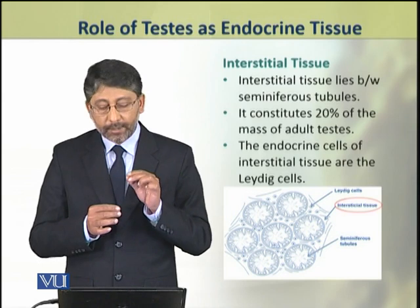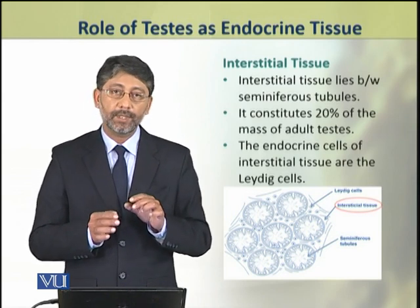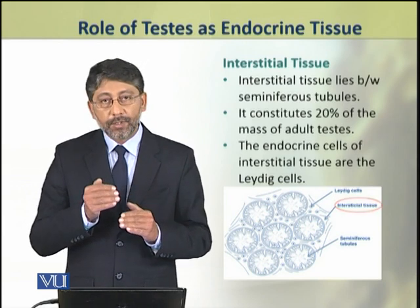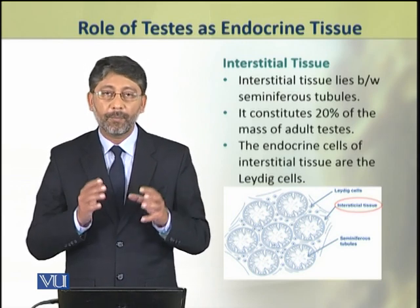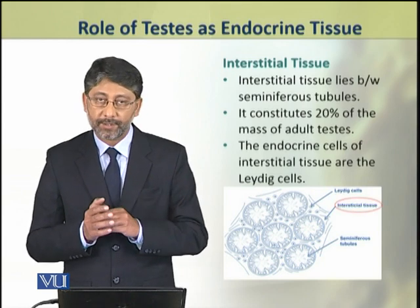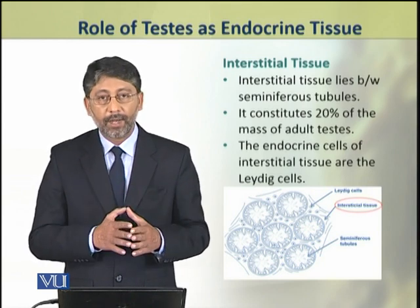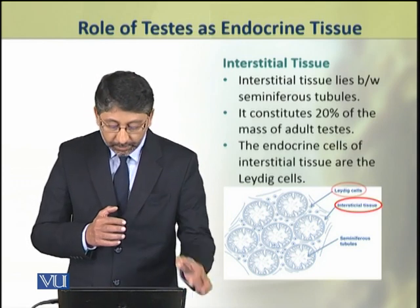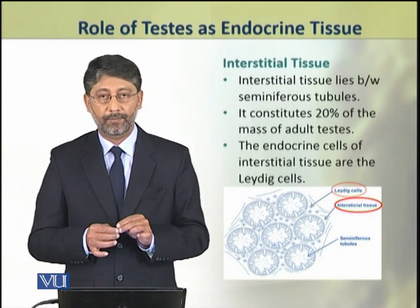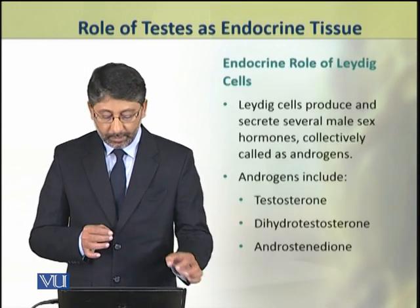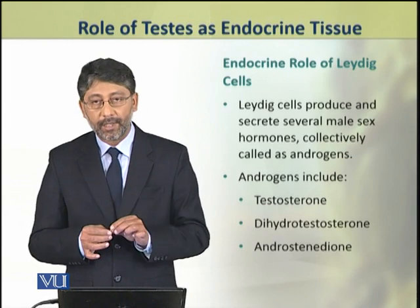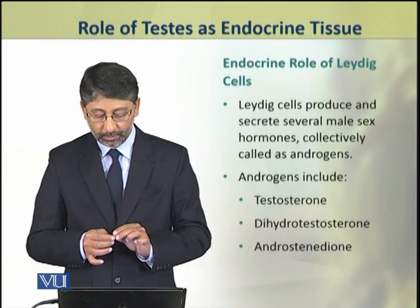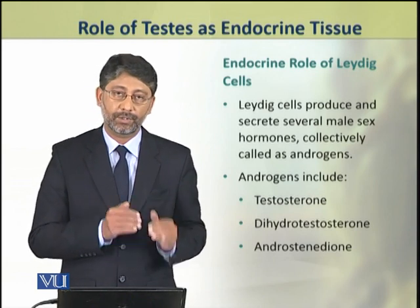The interstitial tissue lies between the seminiferous tubules and constitutes about 20% of the mass of testes. The endocrine cells present in the interstitial tissue are the Leydig cells. Leydig cells produce and secrete male sex hormones collectively called androgens.